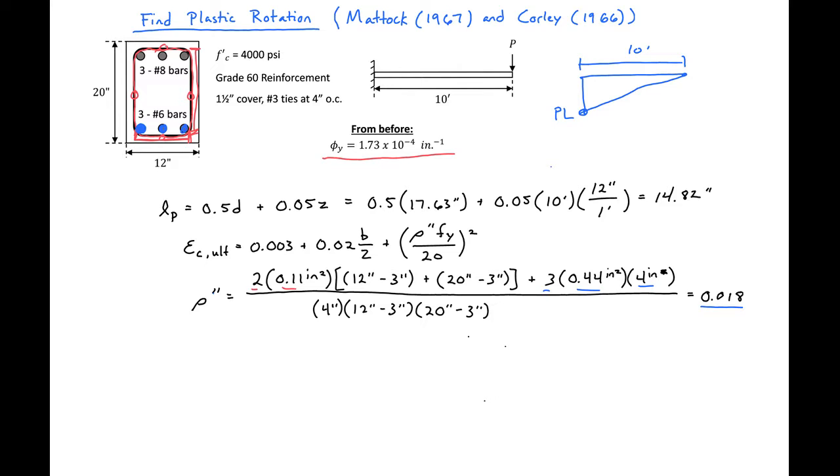We can plug in all of our values now and we'll have 0.003 plus 0.02 times 12 inches over 120 inches, plus our rho double prime which is 0.018 times 60 KSI steel all divided by 20, and then this all squared.